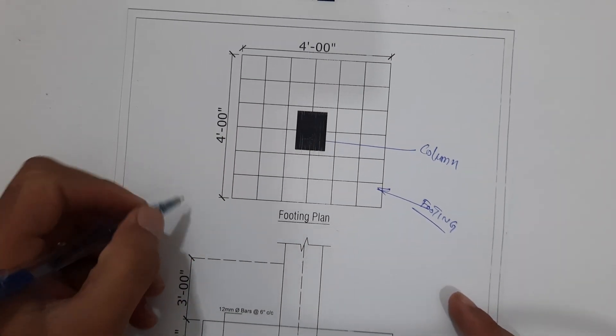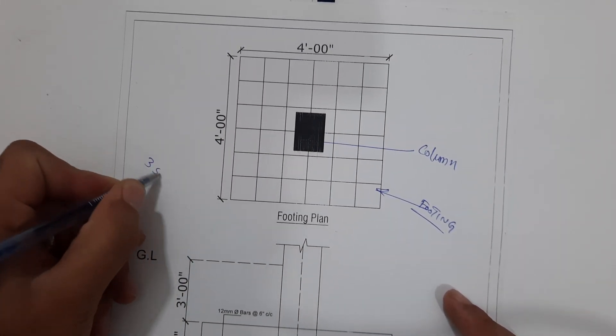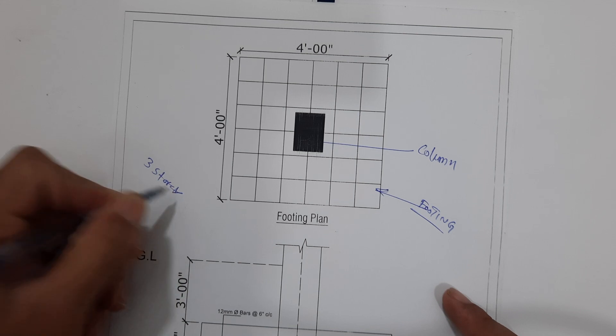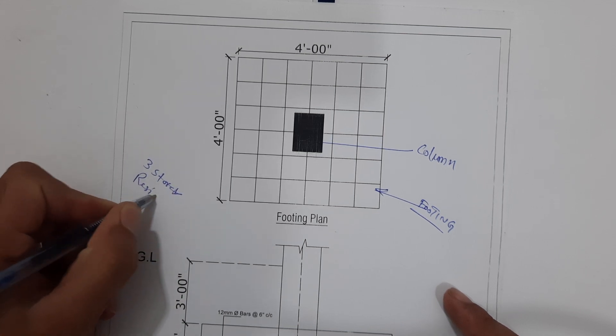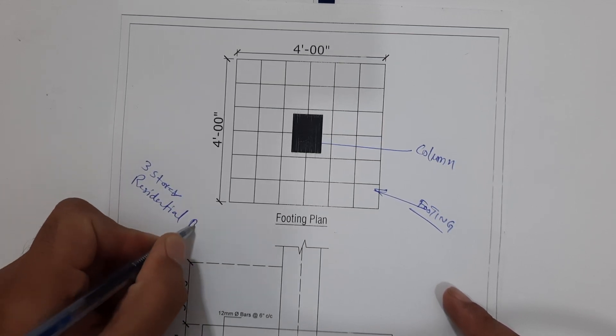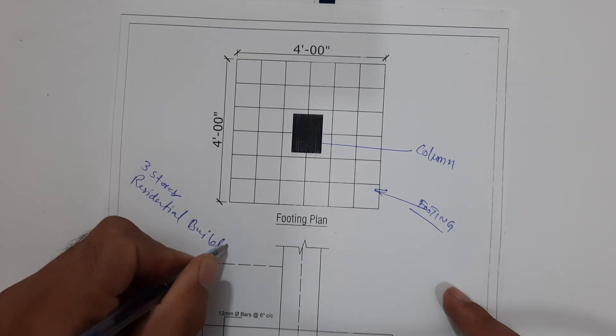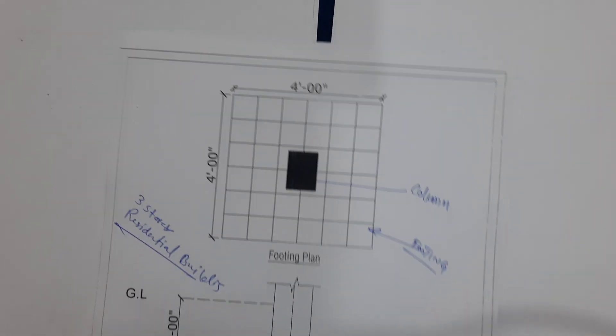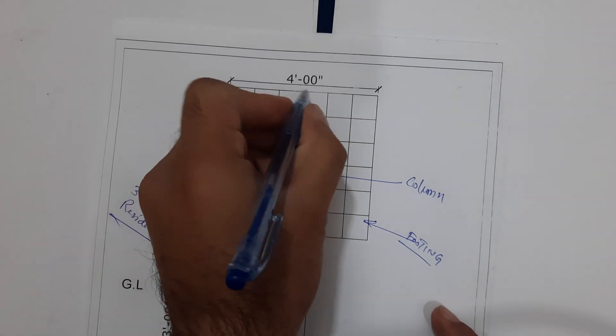This column footing is designed for a three-story residential building, not for commercial building. You can see the size of footing is 4 by 4 feet. This is a square footing.